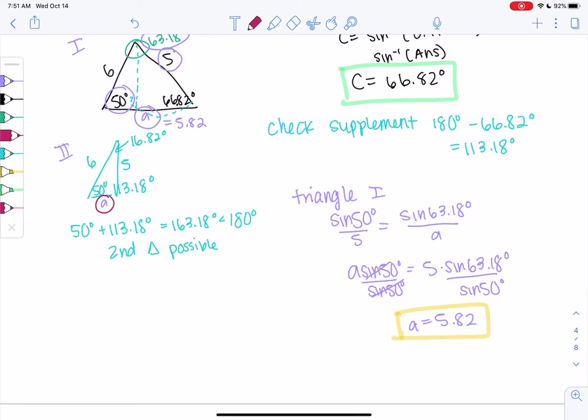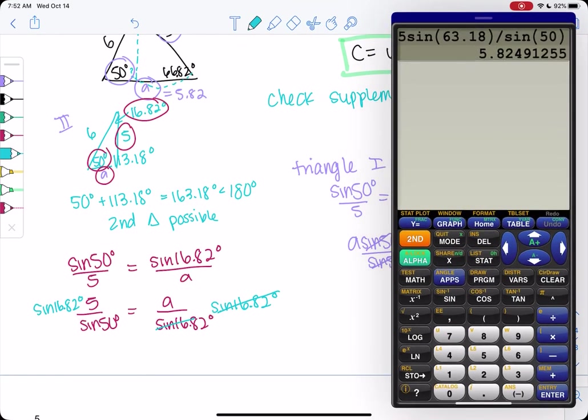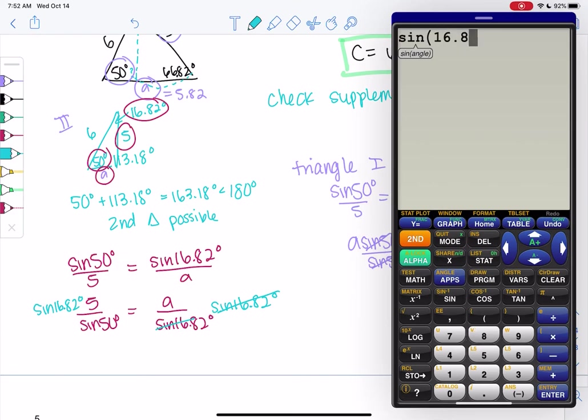So we'll do the same thing. Sine of 50 over 5. And then we get sine of 16.82 over A because it makes a different angle. I'm going to flip them because I think that way is easier. So 5 over sine of 50 is A over sine of 16.82. I like this better than cross multiplying, just giving you multiple tools. And multiply by sine of 16.82.